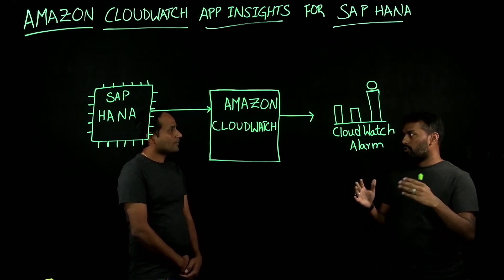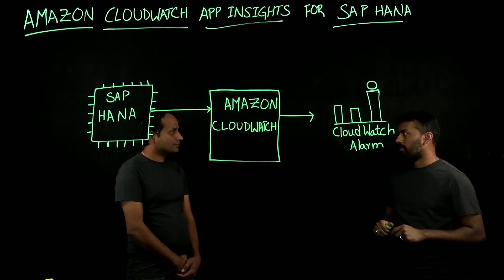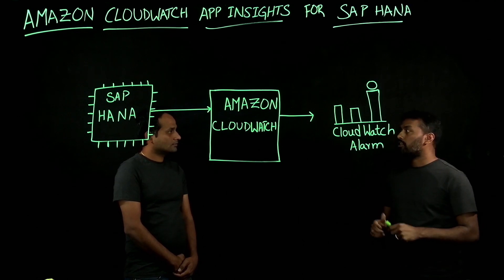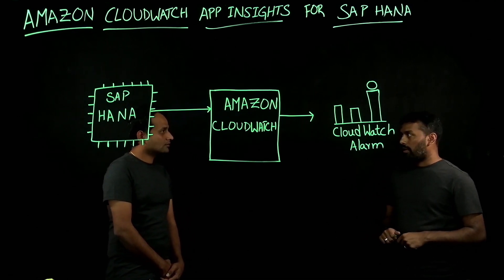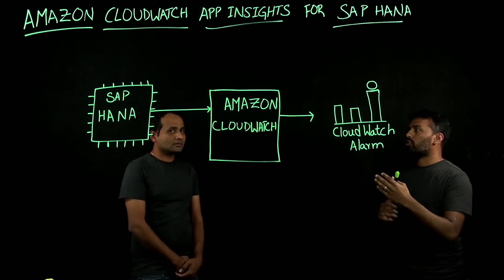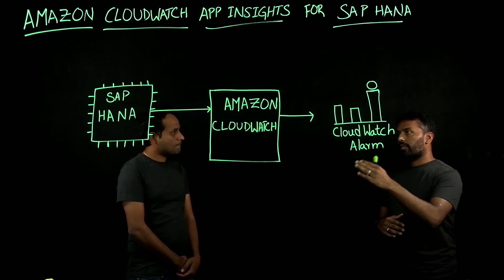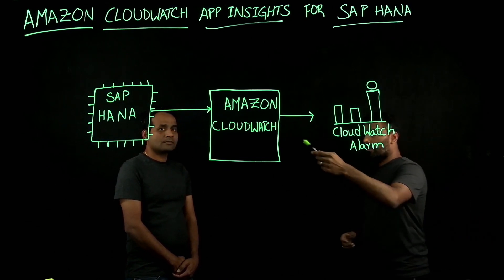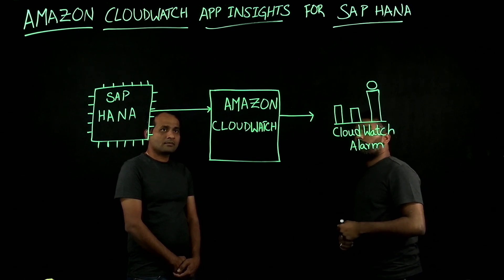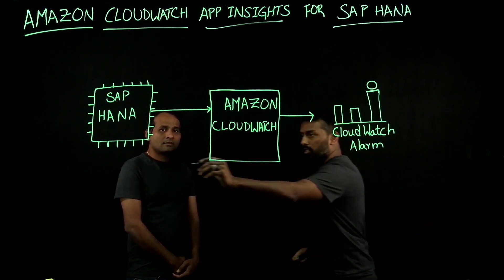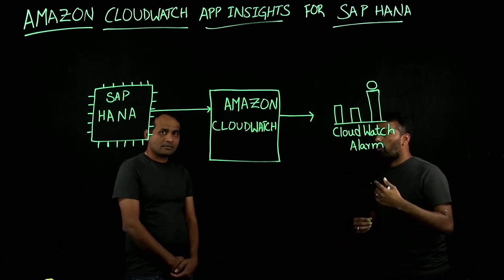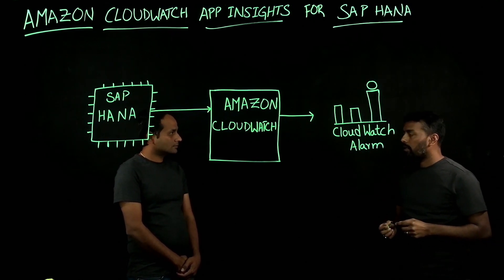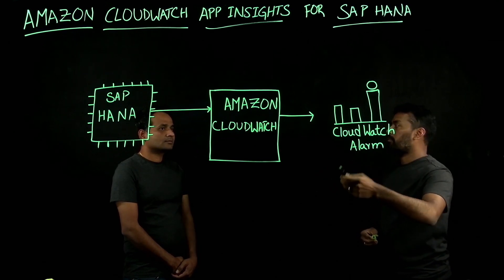You have the capability to monitor your entire full stack — applications. When it comes to SAP HANA, Amazon CloudWatch Application Insights supports observability for SAP HANA databases as well, along with other applications like SQL databases or .NET applications. Similarly, SAP HANA databases are also supported. The way it works is that you have an SAP HANA database running on an EC2 instance with a CloudWatch agent installed. The key metrics are collected by the CloudWatch agent, passed on to the CloudWatch service, and based on the information available, automatic alarms can be generated.